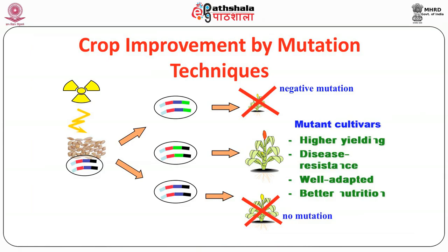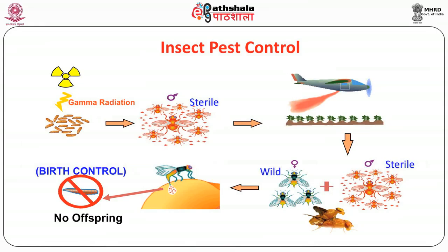In agriculture, radionuclides can be used for improvement of crops by mutation techniques. When radiation comes on seeds, it produces mutant cultivars, increasing crop yield. Insect pest control is another very useful application in agriculture — specific types of radiation can be used to control insects that damage crops.